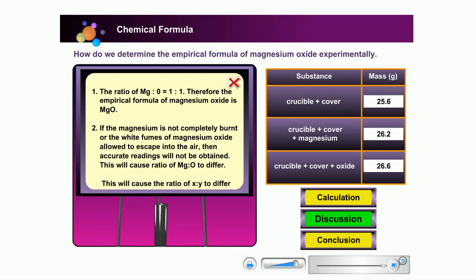If the magnesium is not completely burnt or the white fumes of magnesium oxide are allowed to escape into the air, then accurate readings will not be obtained. This will cause the ratio of magnesium to oxygen to differ.